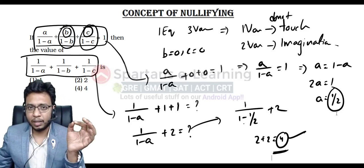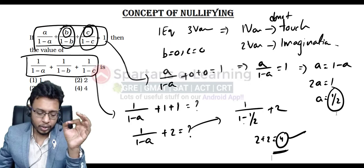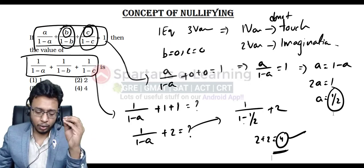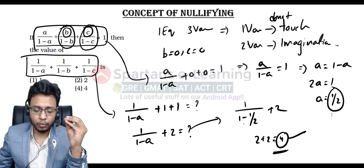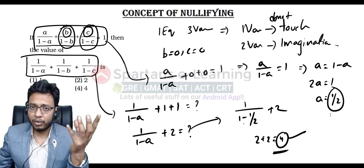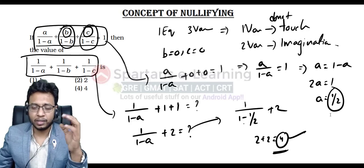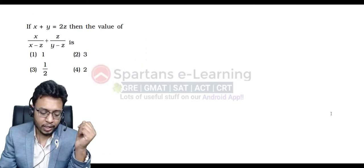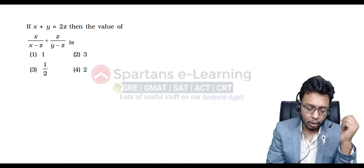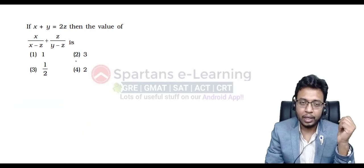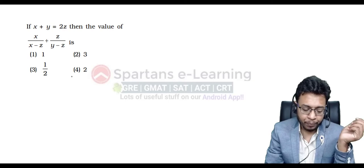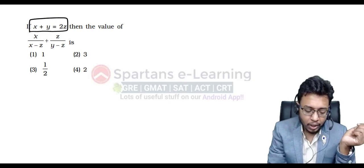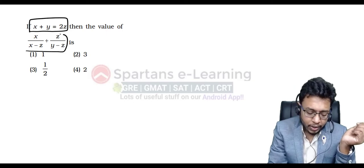Whenever in your exam you get stuck at a point where you see these kinds of difficult questions — this is of 165 plus level — in case you find a question where you have more variables and fewer equations, try to use this concept. Next question: x + y = 2z. Find the value of x/(x−z) + y/(y−z). Here we have three variables x, y, z and only one equation given.